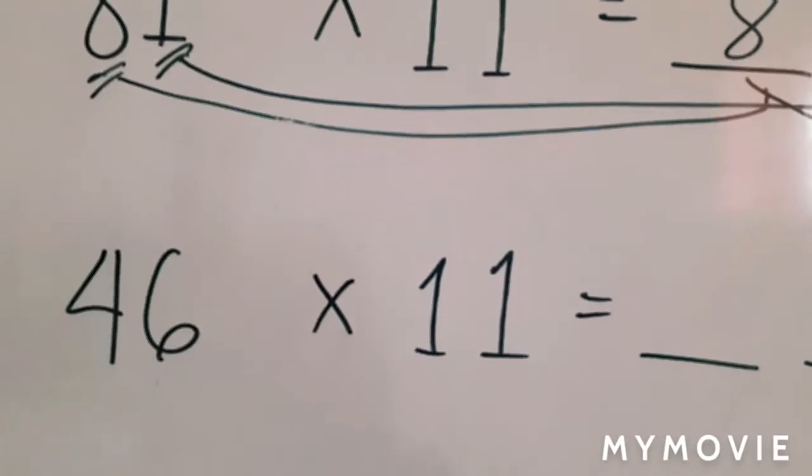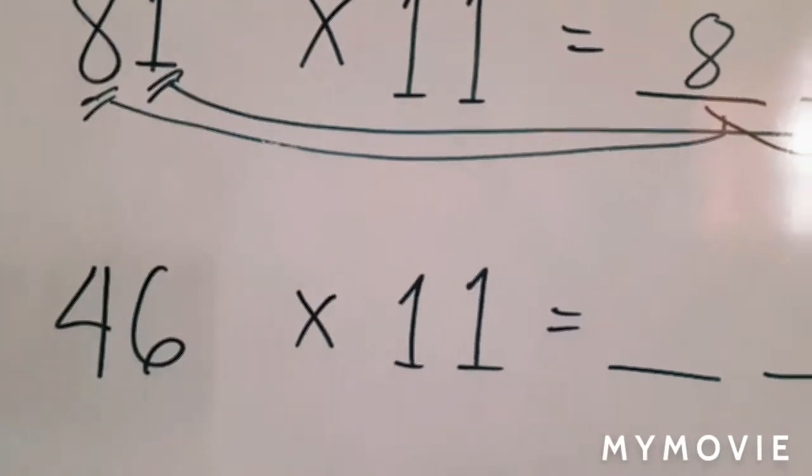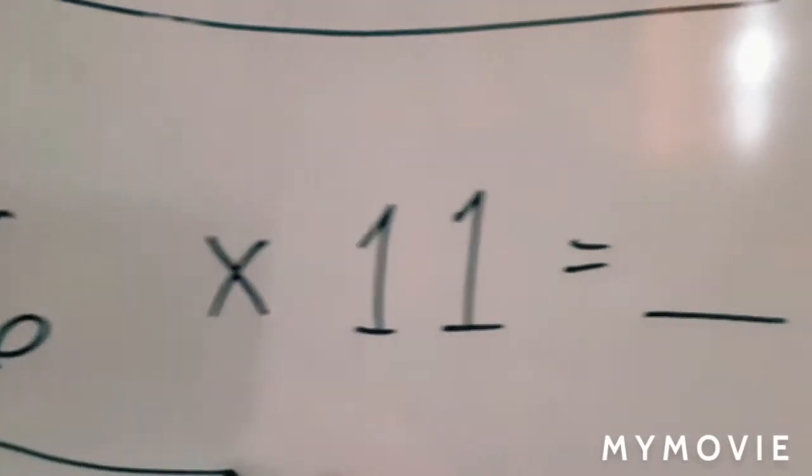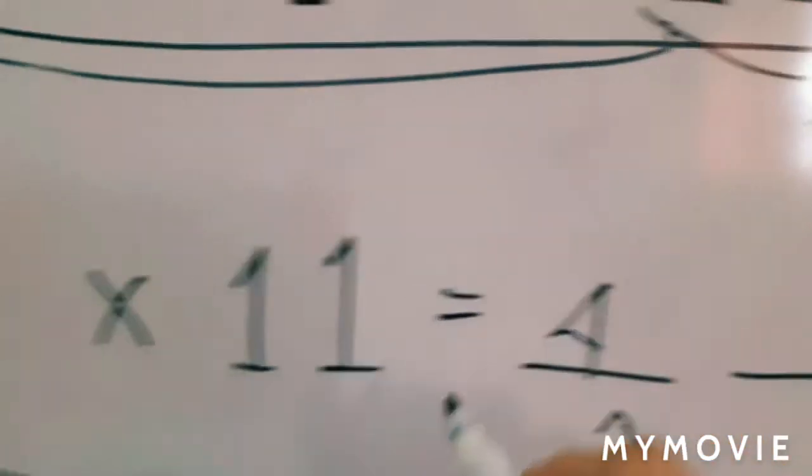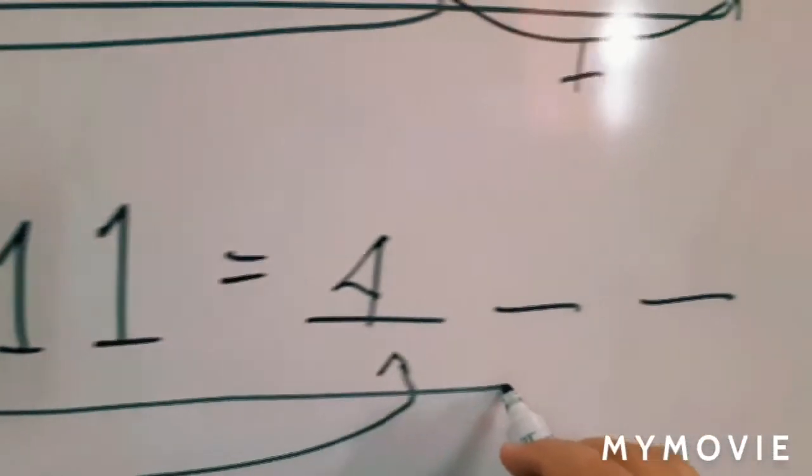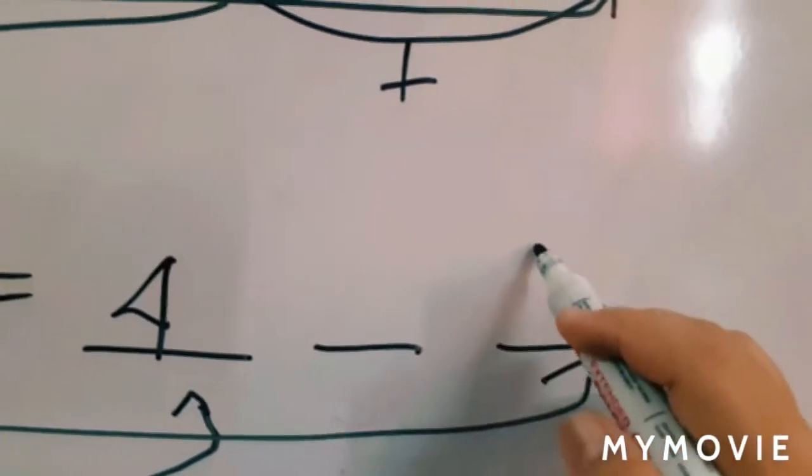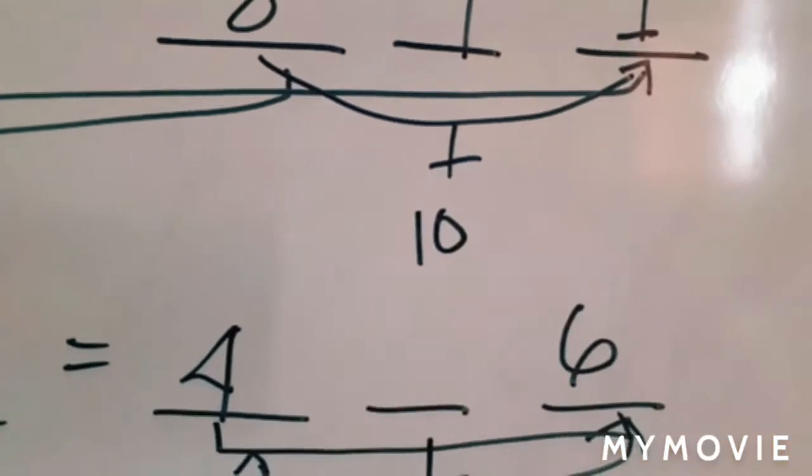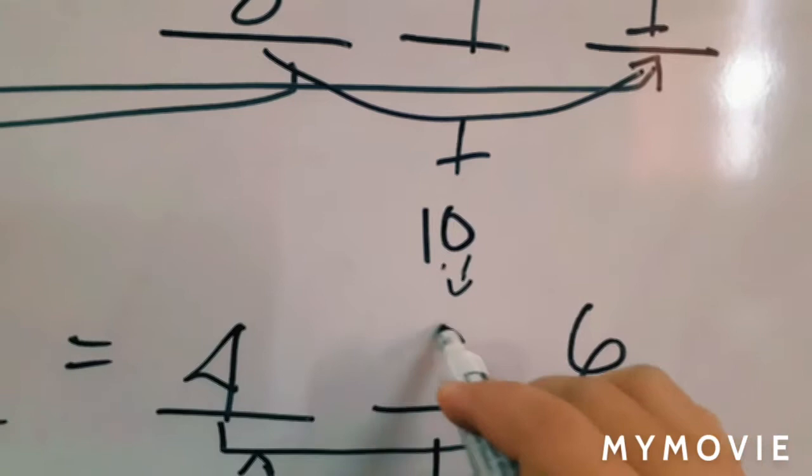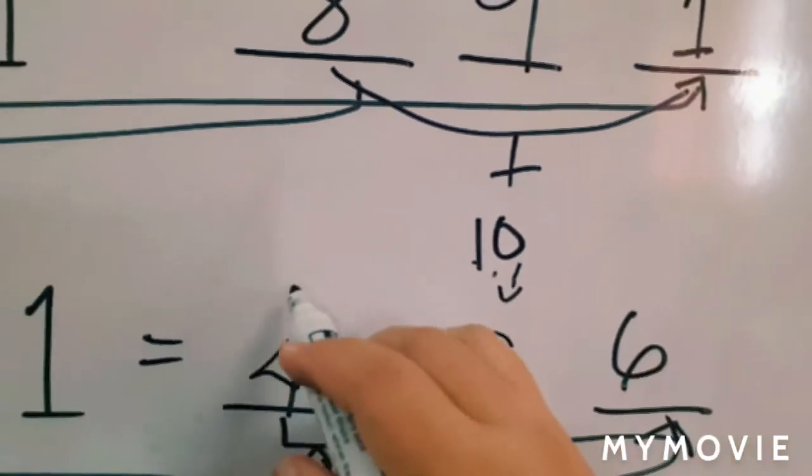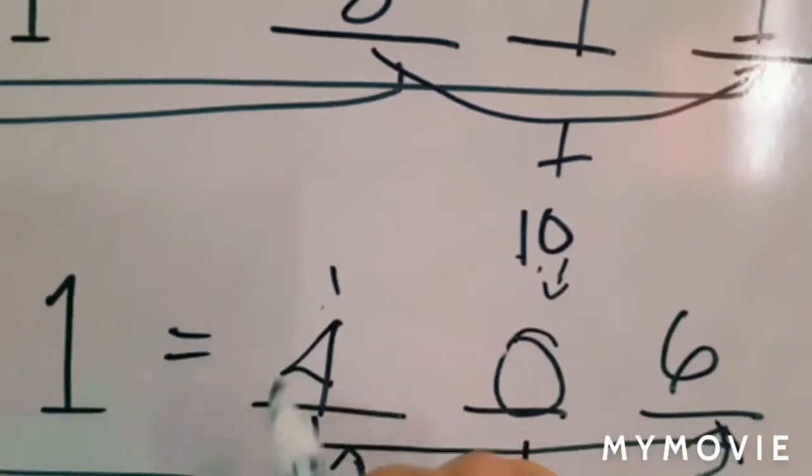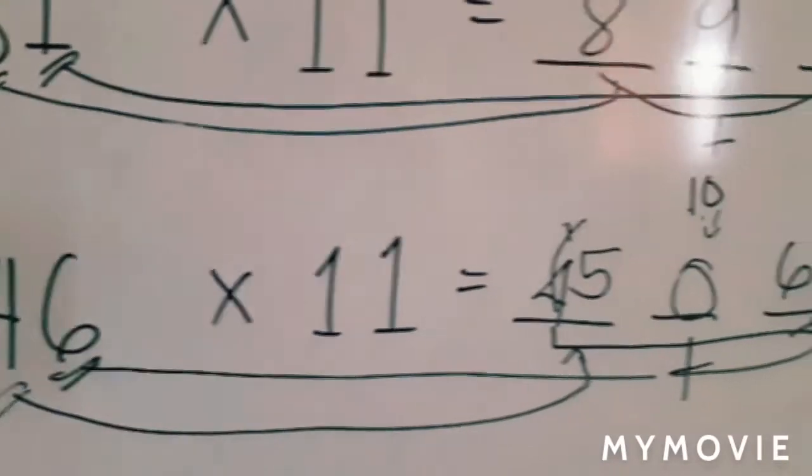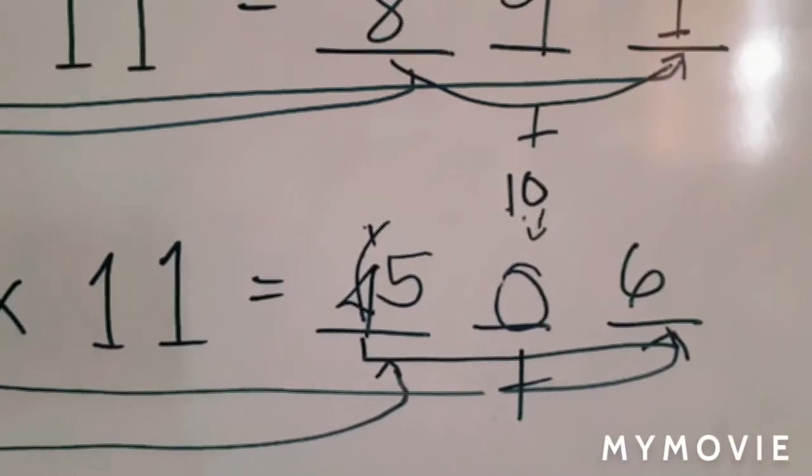Next, this one involves regrouping. 46 times 11. Again, we copy 4 as our first digit. Next, 6 as our last digit. Now, as we add 4 plus 6, it will give us 10. So, 10 is 1 and 0. We put 0 here, and we regroup 1 on top of 4. 1 plus 4 is 5. Now this will become 5. Therefore, 46 times 11 is 506.